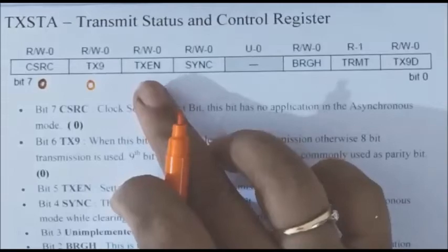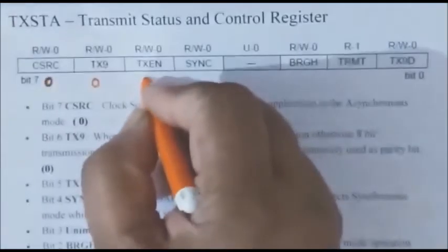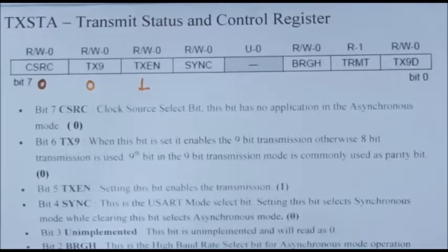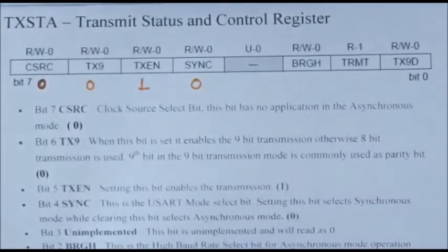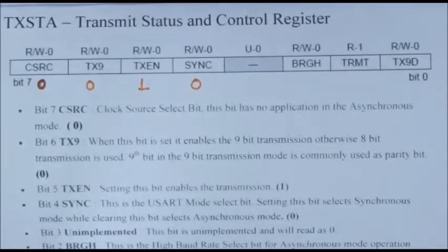The D5 bit is TXEN — used to enable transmission. If this bit is set to 1, the transmitter block is enabled. We must always set this bit to 1 for the transmitter program. The next bit is the SYNC bit. If this bit is set to 1, synchronous mode is enabled, but since we are using asynchronous mode, this bit should be 0. The next bit, BRGH, is used to select the baud rate. If set to 1, high-speed baud rate is used. 9600 baud rate is considered low speed, so for 9600 baud rate, this bit is set to 0.